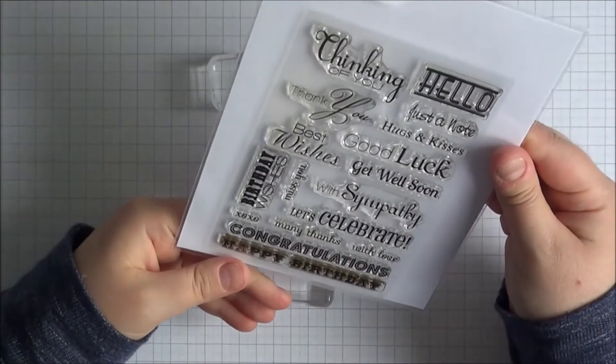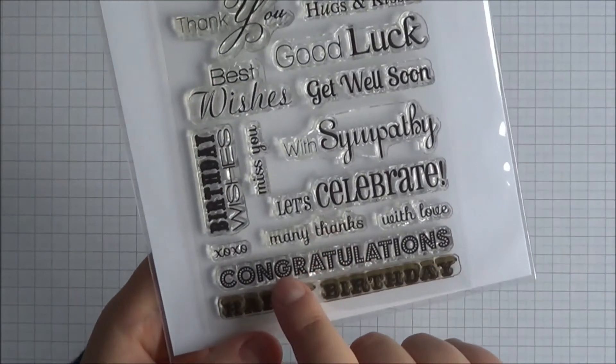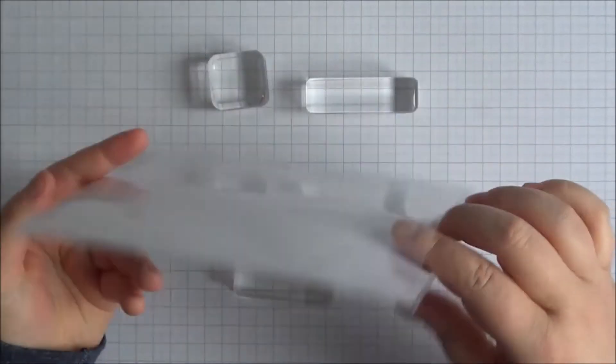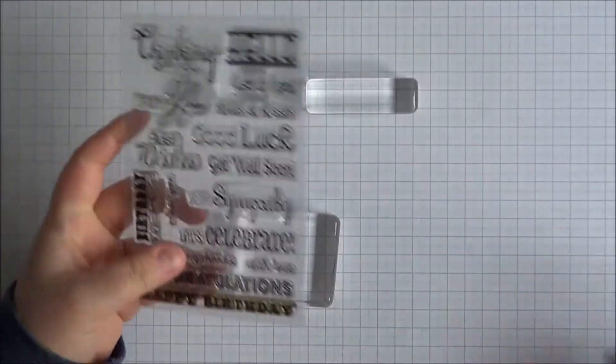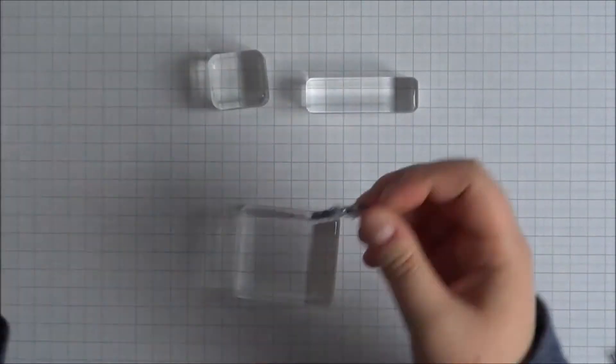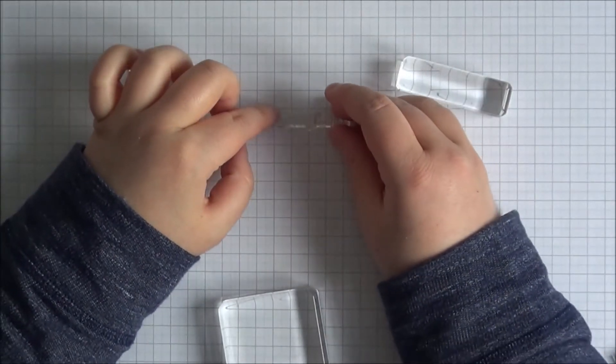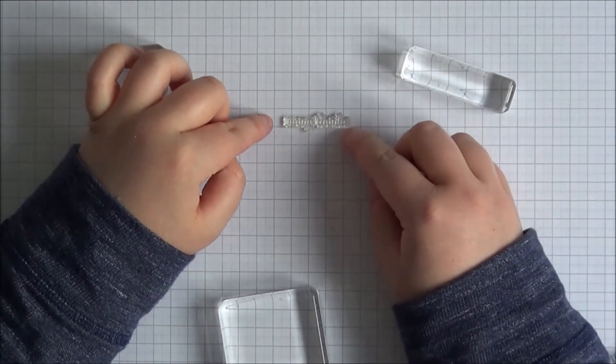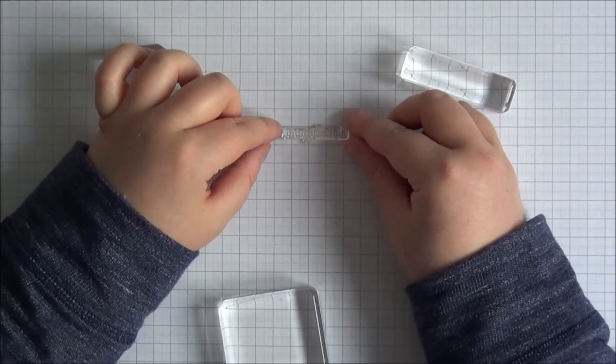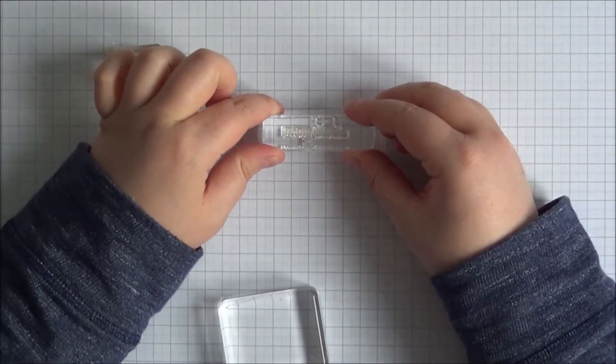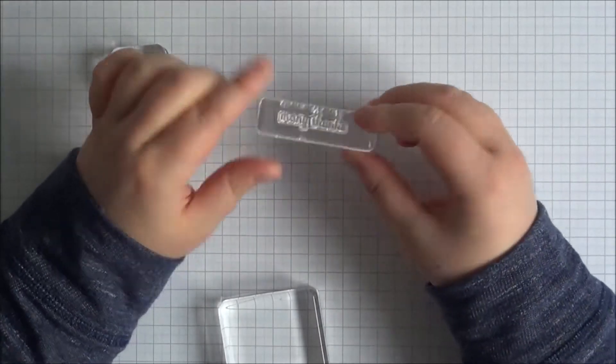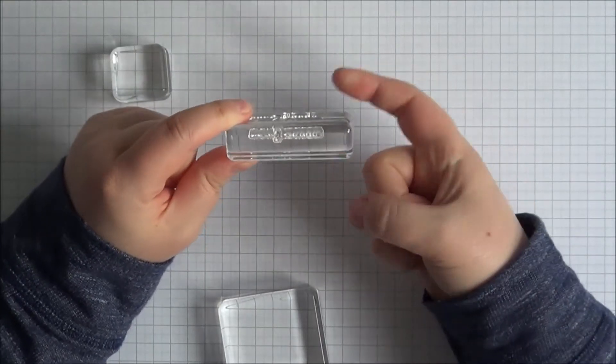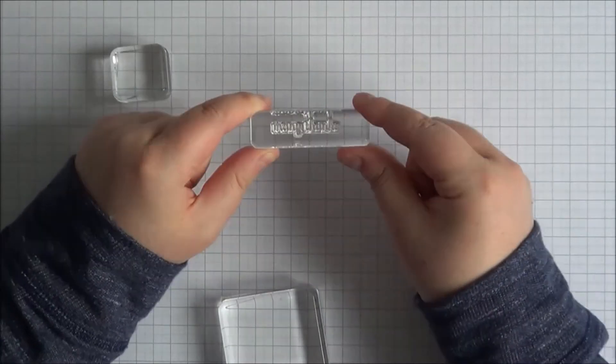So this stamp set is the Clearly Besotted Stamps Many Messages set. This one here, the Many Thanks, that would be really good to stamp using that. It's really good for small sentiments. Obviously the majority of them you wouldn't be able to fit on there. But this one in particular you could, and the way I would use it is to line it up on my grid mat. I'm not going to lean over here because you will see my big head. But this is what I would do. I would line it up on my grid mat and then stick it on and then stamp on my project that way. So at least I know that, although I don't know that I'm holding it straight, I would know that the sentiment is straight on the block.